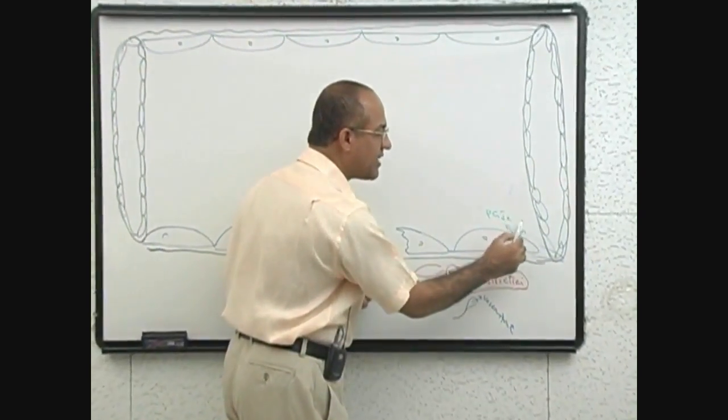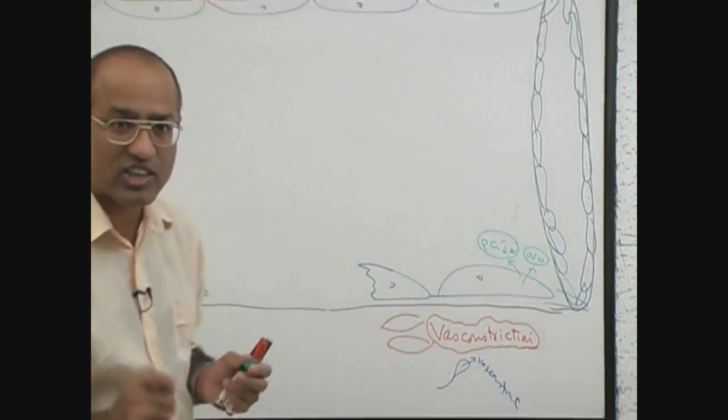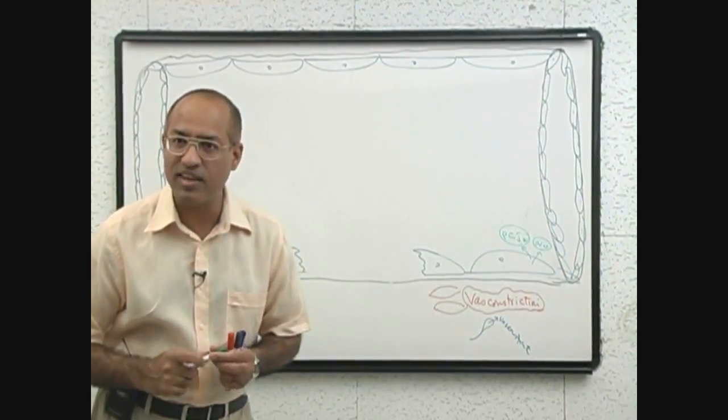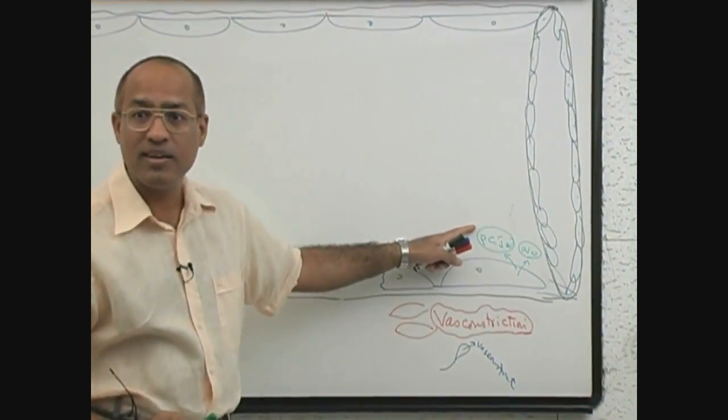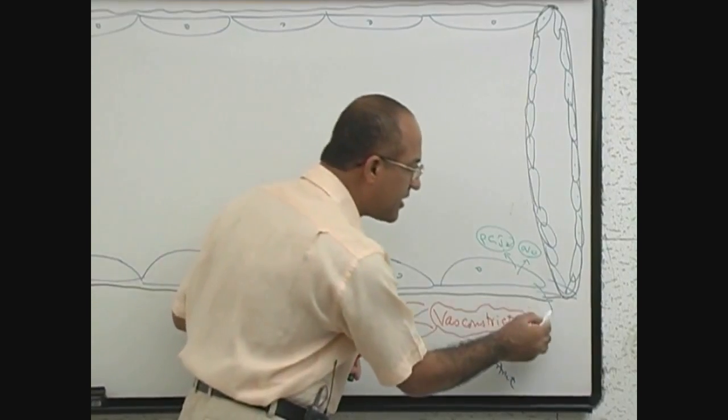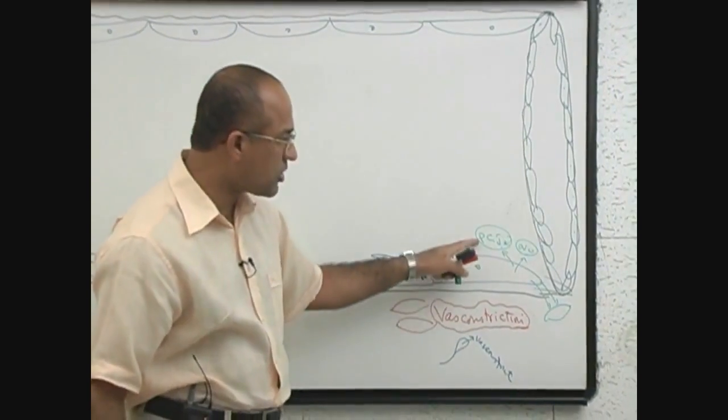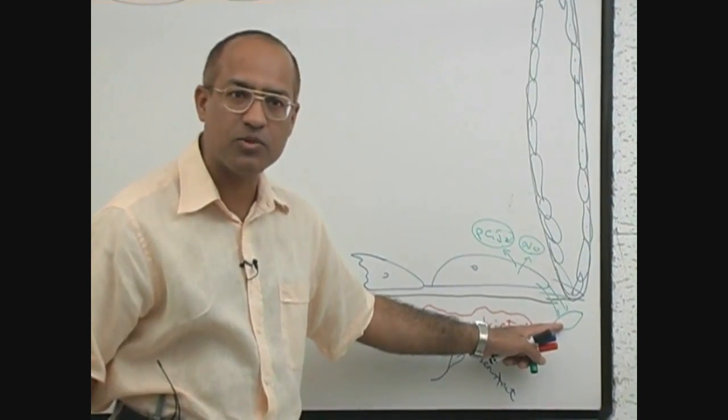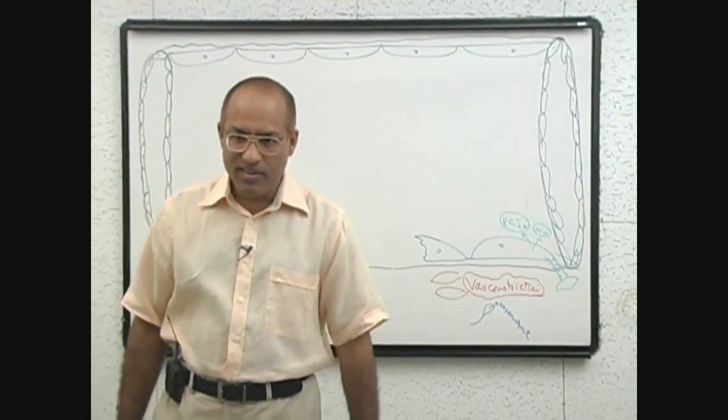What are the vasodilators produced by endothelial cells in health? PGI2 and nitric oxide. These two products are not only anti-platelet aggregation but also vasodilators. Prostacyclin and nitric oxide, when they go to the lumen, they prevent platelet aggregation. And when these products come to the smooth muscle, they relax the smooth muscle. Prostacyclin relaxes the smooth muscle. Nitric oxide also relaxes the smooth muscle. So they are mediating vasodilation.